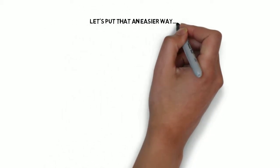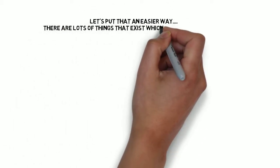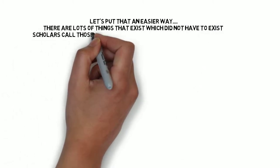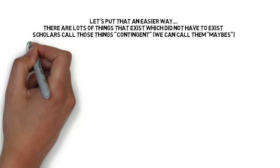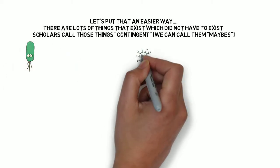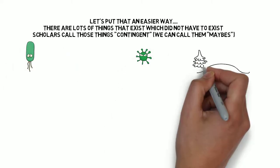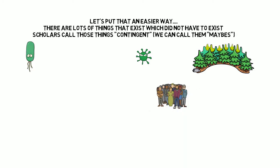There are many things which you come across in our universe which you can imagine not existing. We can call those things contingent, or we can call them maybes. So we can think of germs, viruses, trees, animals, people, the things that people make, galaxies, stars.